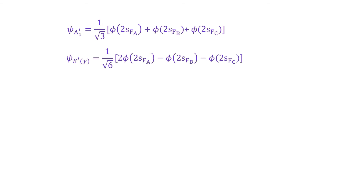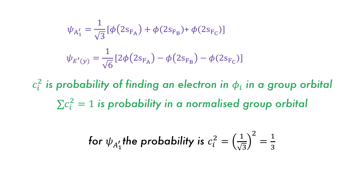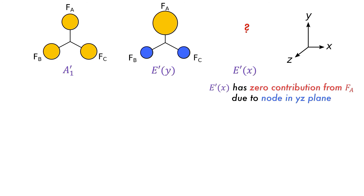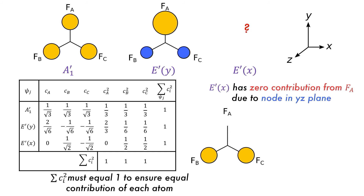This information, and especially the coefficients for A1 prime and E prime Y, can be used to determine the third molecular wave function. The coefficient squared gives the probability of finding an electron in an atomic orbital within a group orbital, and the sum of the squares of the coefficients must equal 1. For A1 prime, 1 over root 3 squared is one third, and three orbitals gives one third plus one third plus one third equals 1. Since the 2S orbital of F-A lies on the Y-axis, it will predominantly be used for the E prime Y interaction, with zero contribution to E prime X because of the node defined by the YZ plane.